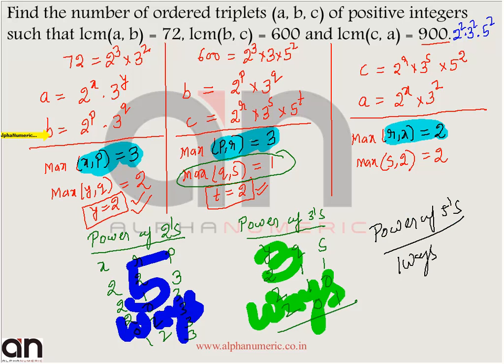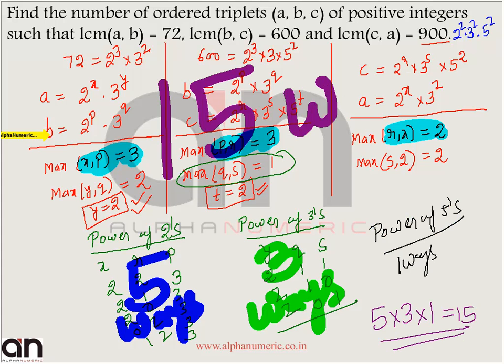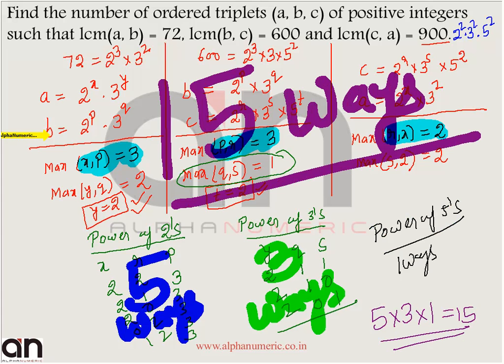The total number of ordered triplets is 5 into 3 into 1 — wait, the answer for this question is 20. This question had been posted for 40 hours and not a single person was able to solve it. Most of you who are attempting such problems need to work on your basics and fundamentals, because if your basics are clear, you can solve any question. That's it for today.